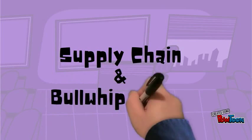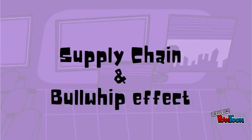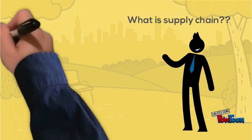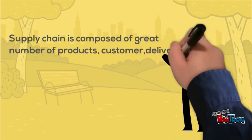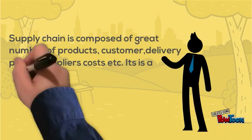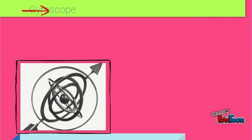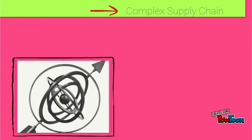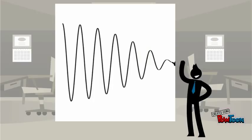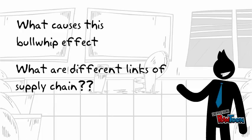Today we are going to discuss about supply chain and one of its effects that causes distortion — the bullwhip effect. Supply chain is composed of a great number of products, customers, delivery points, suppliers, costs, etc., making it a complex network. Like a gyroscope, which has three different axes where movement in one axis disturbs the other two, the same is the case with supply chain: a small distortion at some level results in a big distortion at another level.